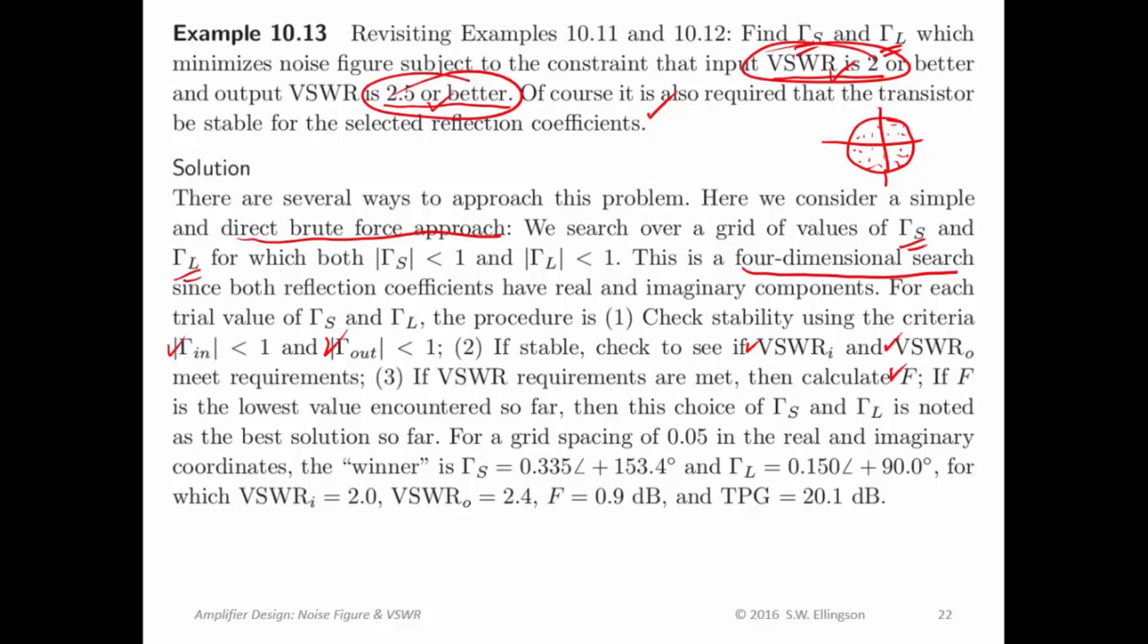If you do, then you calculate the noise figure, see what you get there, and you keep track of it. When you see a noise figure which is lower than what you've seen before, then you remember that value of gamma sub S and gamma sub L, but you keep going because you might find a lower value somewhere else.